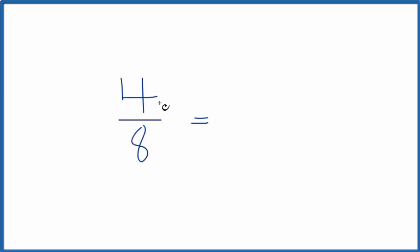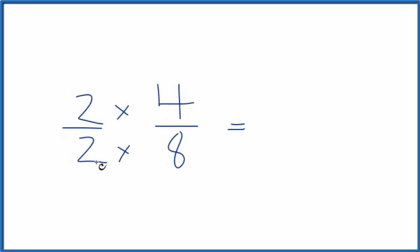So we could multiply 4 8ths by 1. It would still be 4 8ths. But instead of 1, let's multiply by 2 over 2. That way, 2 divided by 2, it's still 1. We're not changing the value.